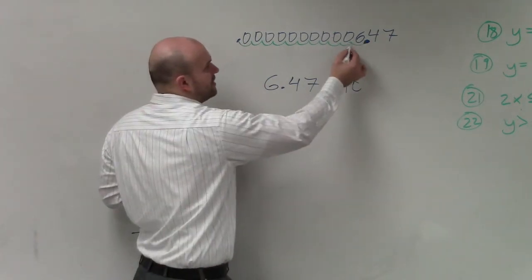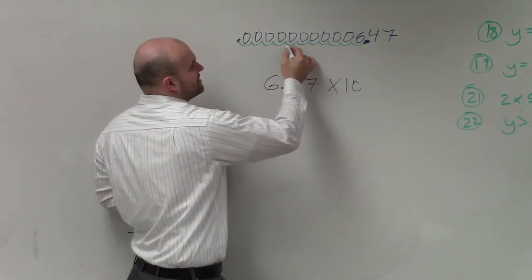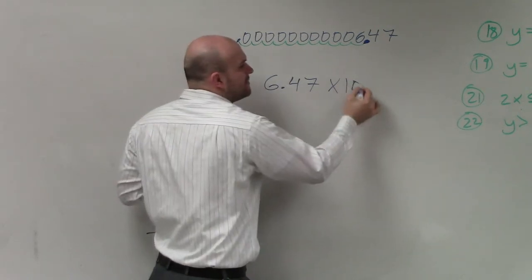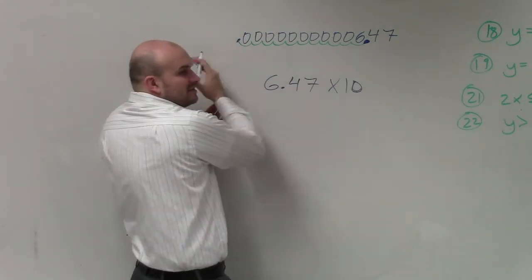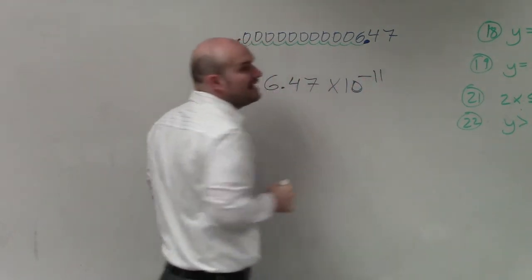So it would be, again, 1, 2, 3, 4, 5, 6, 7, 8, 9, 10, 11. But remember, since we're moving to the left, it's going to be negative.